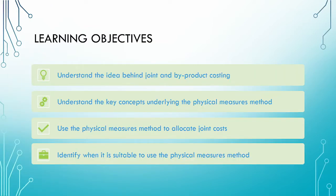In this video, we will begin by revising the basic idea behind joint and byproduct costing. We will then understand the key ideas behind the physical measures method. Once we have understood these key ideas, we will look at a practical example in which we allocate the joint costs to the joint products. From this example, we will see the advantages and disadvantages of the physical measures method and conclude by discussing under what circumstances this method is suitable.